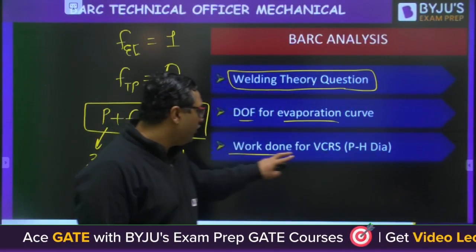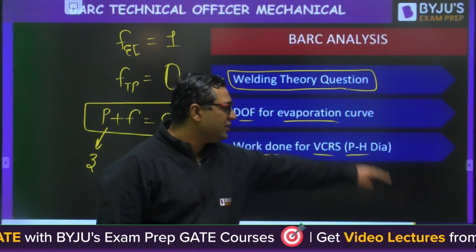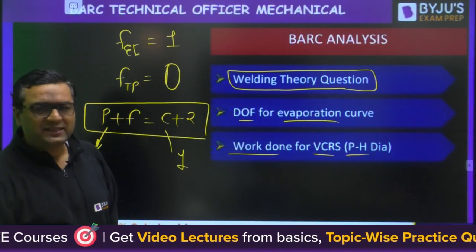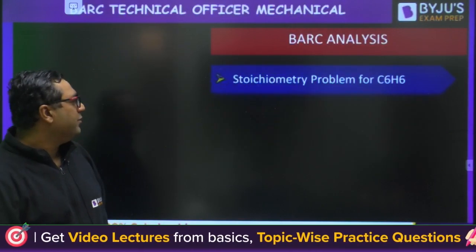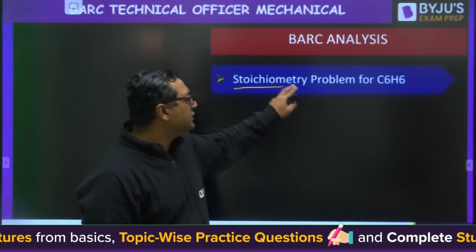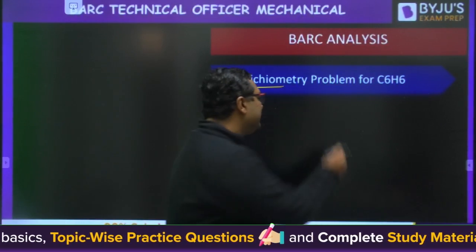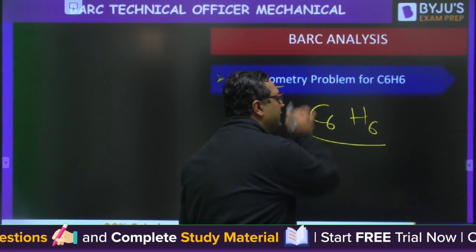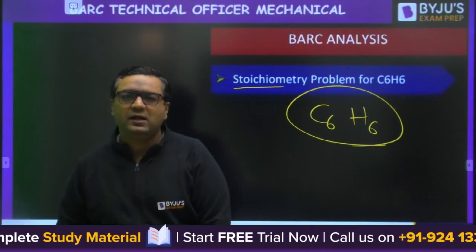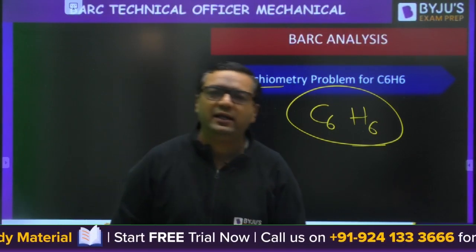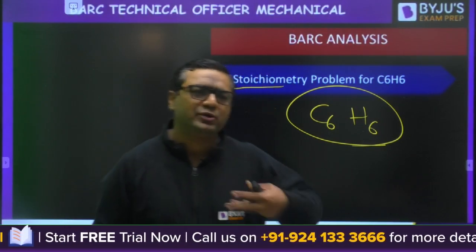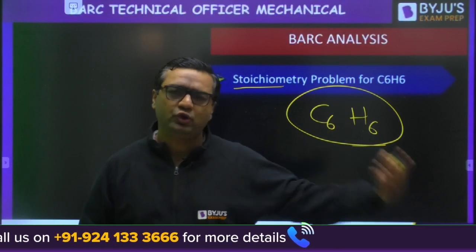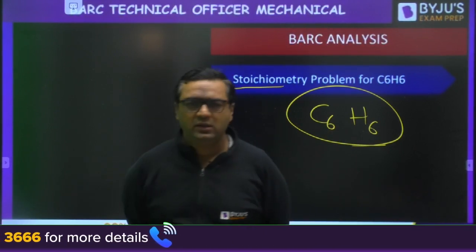Work done for a VCRS (Vapour Compression Refrigeration System) pH diagram was given — once again from RAC (Refrigeration and Air Conditioning). There was also a stoichiometry problem for C₆H₆. I don't have the exact data, but it involved finding how many moles react with another substance — similar to problems studied in IC engines.